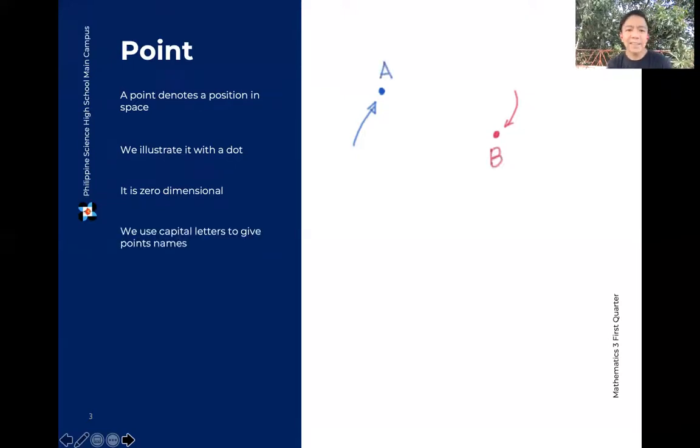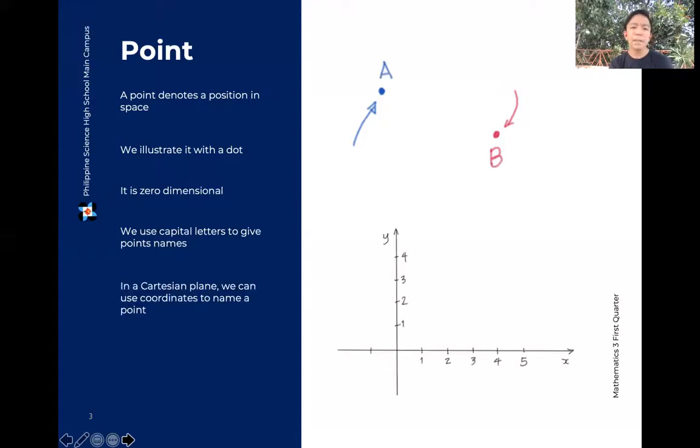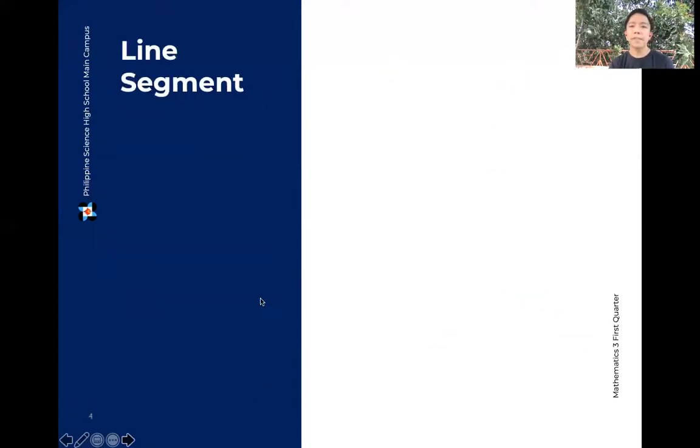So yung pagpangalan natin sa kanya, gumagamit tayo usually ng capital letters, yung sulat natin sa proximity ng point natin. And in a Cartesian plane, pag naglagay tayo dun ng point, pwede rin natin gamitin yung coordinates niya sa Cartesian plane para bigyan siya ng pangalan. So here, pwede natin siyang tawagin point C to 1. So kinukombine natin yung capital letters tsaka yung coordinates. Or minsan, pwedeng yung coordinates lang pag hindi naman kailangan talaga ng sarili niyang pangalan.